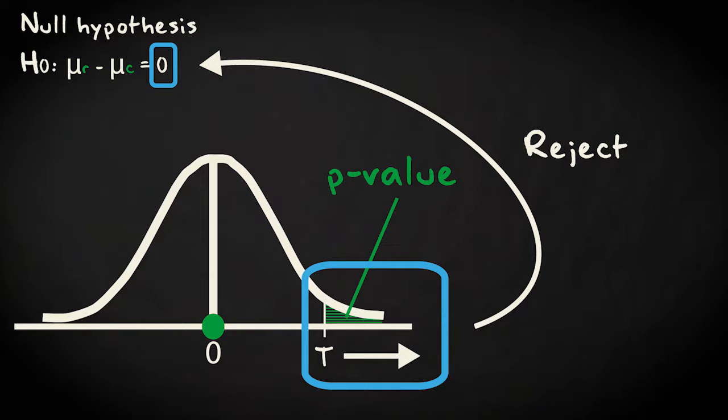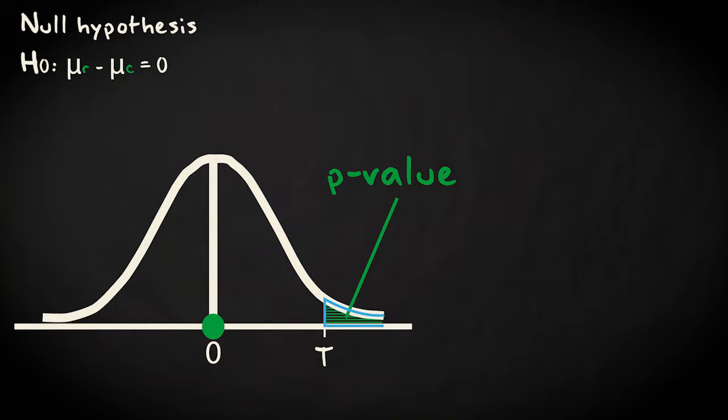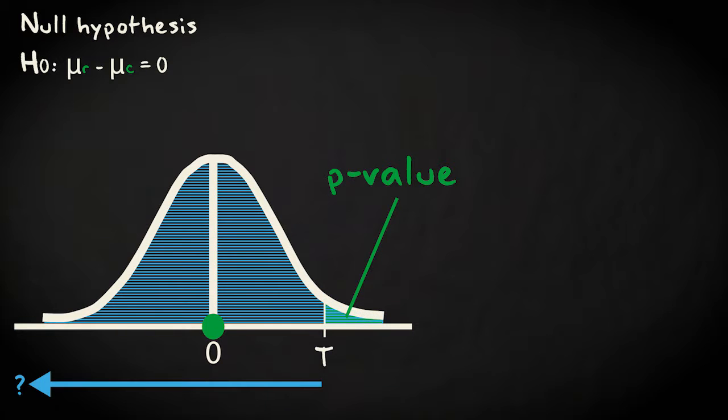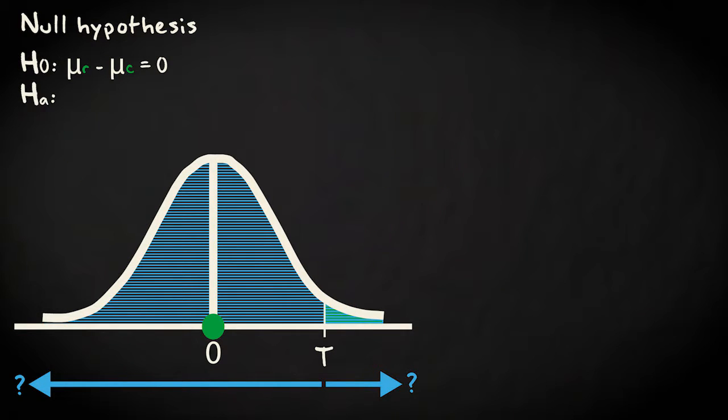This p-value is determined, with statistical software, by calculating the area under the curve associated with the test statistic value and more extreme values. But what's more extreme? Should we take the area to the left or to the right of our test statistic value? We need to decide beforehand by specifying an alternative hypothesis.